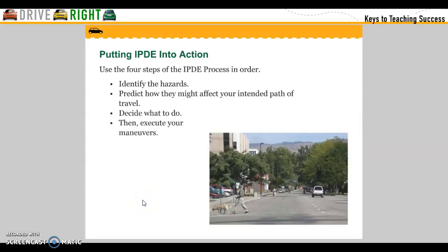Putting IPTID into action: Use the four steps of the IPTID process in order to identify the hazard, predict how they might affect your intended path of travel, decide what to do, then execute your maneuver.